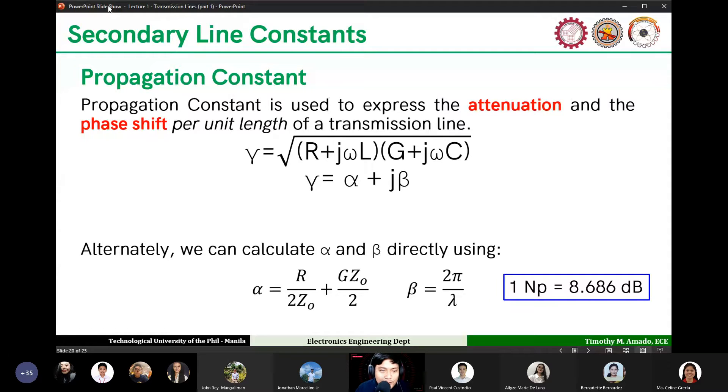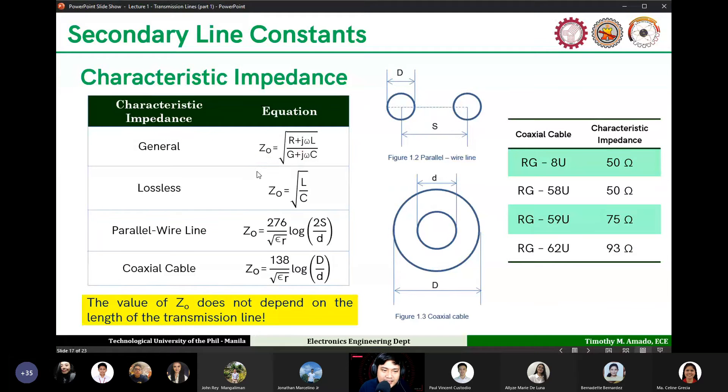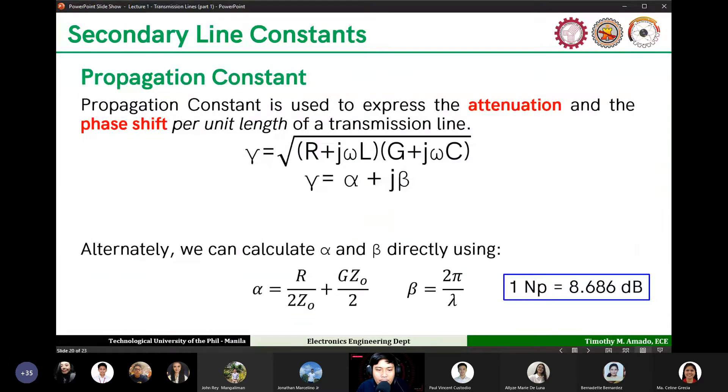Now let's talk about propagation constant. Propagation constant is used to express the attenuation and phase shift per unit length of a transmission line. Here's the formula: square root of (R + jωL)(G + jωC). It's similar to characteristic impedance, but for ZO you divide the two, here you multiply. This is a complex number, so the result has a real part and imaginary part. The real part is the attenuation coefficient and the imaginary part is the phase shift coefficient.